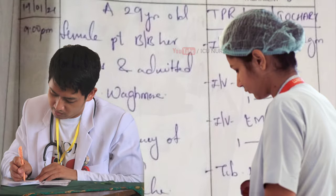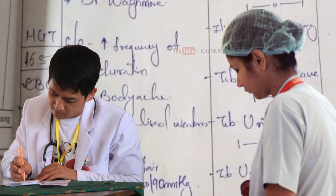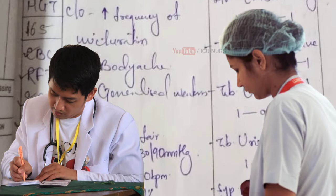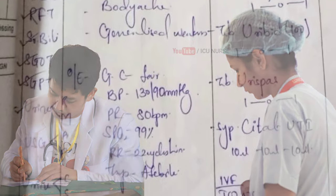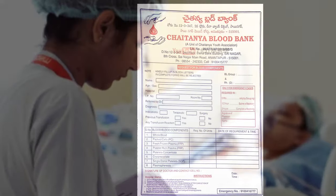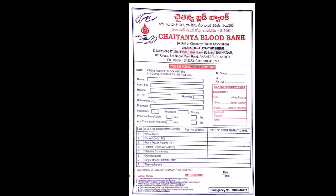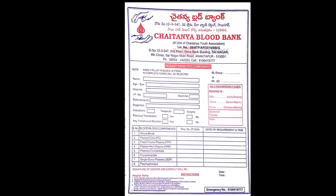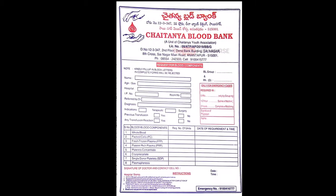Make sure the advice for blood transfusion is documented in the doctor's notes by the doctor who advised for blood transfusion. After receiving the advice for blood transfusion for the patient, fill in a requisition form to get the blood product from the blood bank.